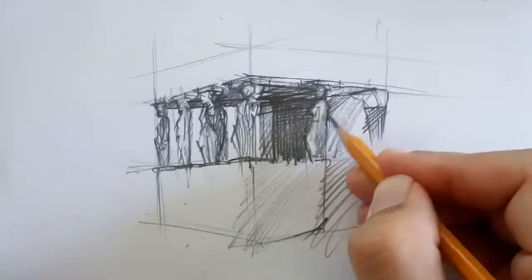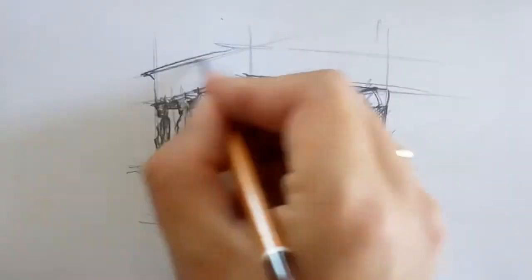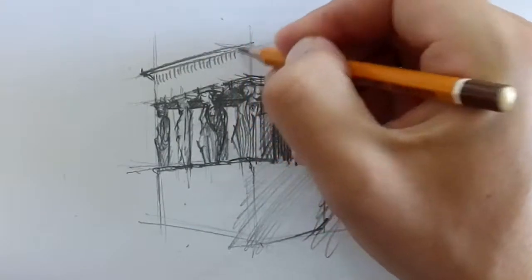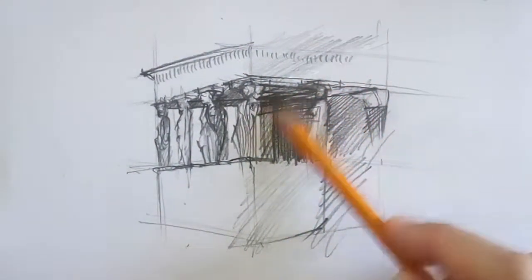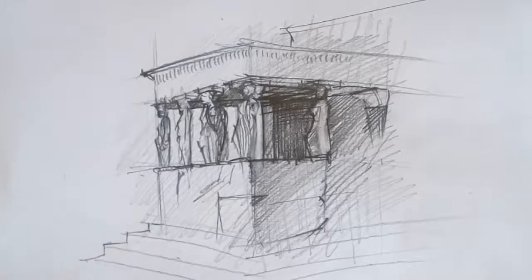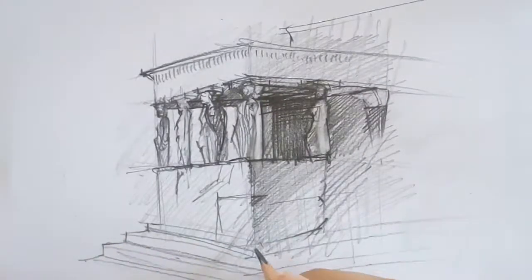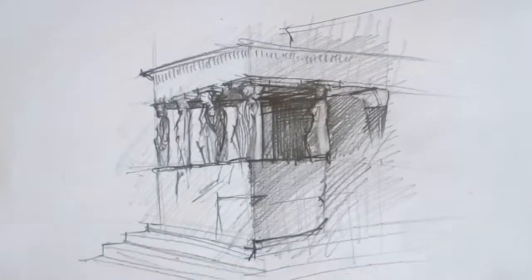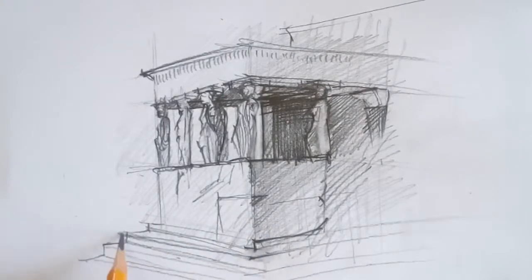The name Caryatids came from an ancient city called Karyae. The city's Artemis temple had dancing women. They wore dancing clothes with a basket on their head, like the Caryatids.